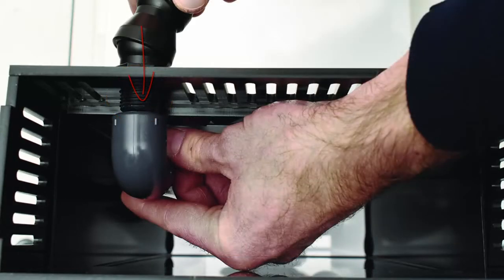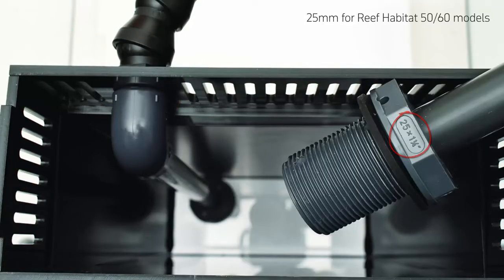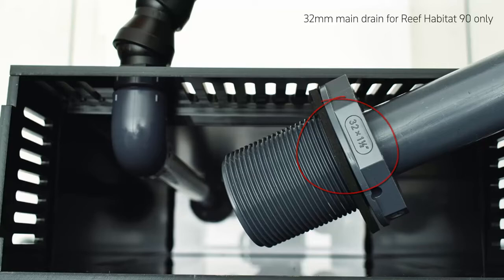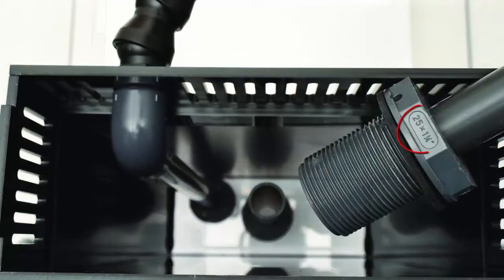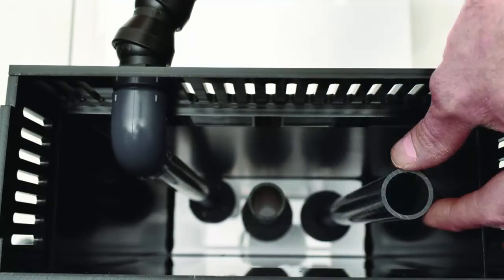Screw in the nozzle through the weir box top. The main drain on the 50 and 60 Reef Habitats is 25mm, 32mm for the Reef Habitat 90. The overflow drains are 25mm for all aquariums.